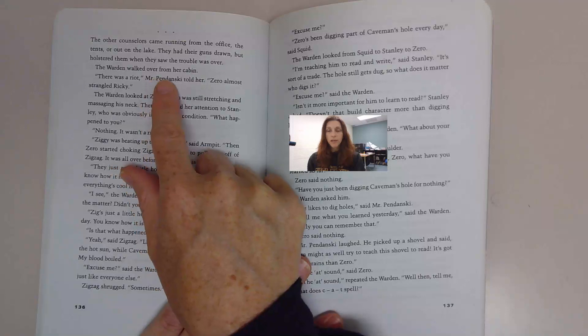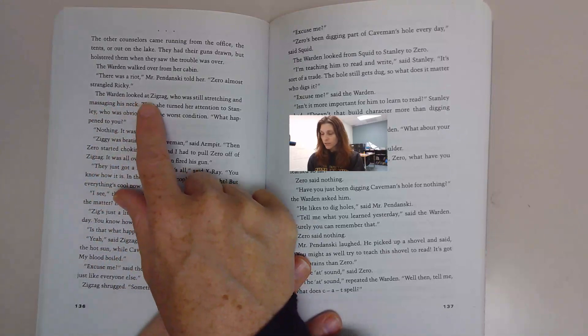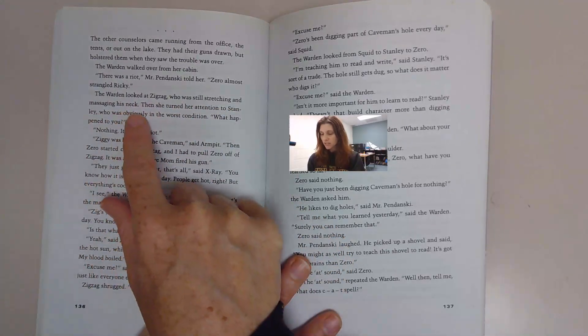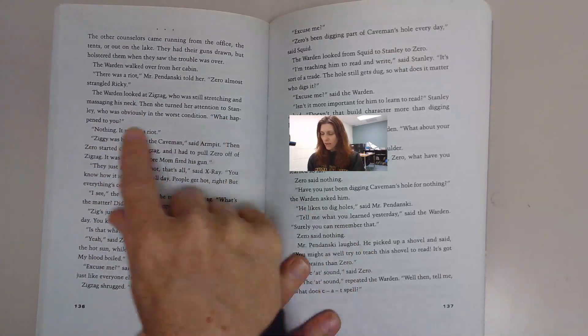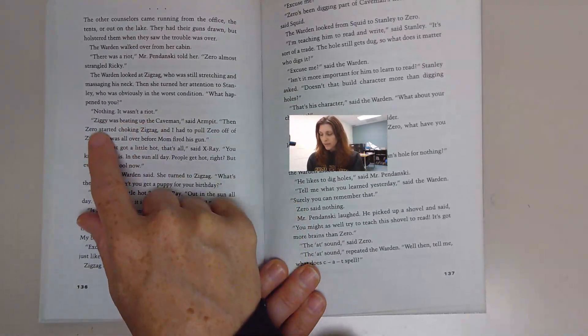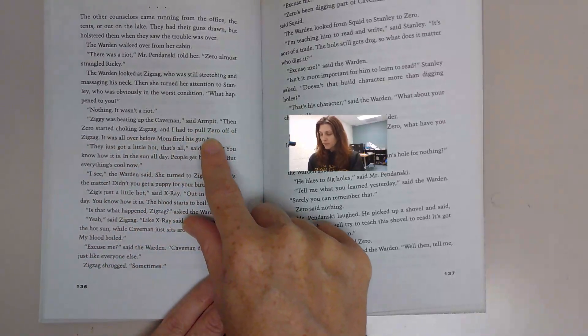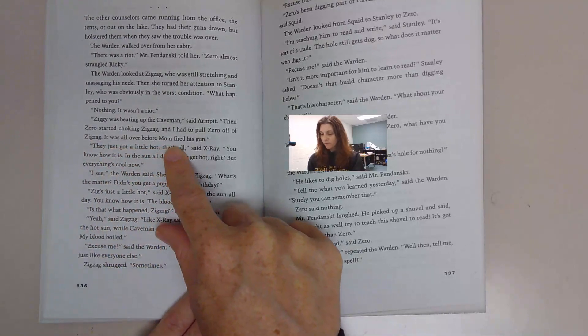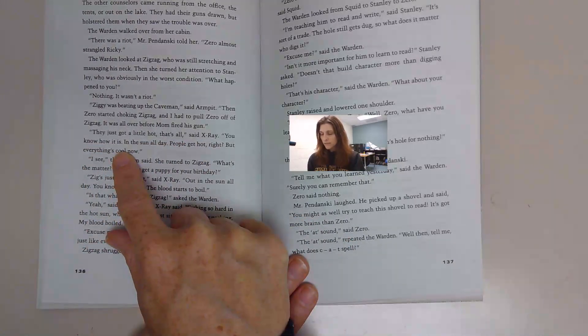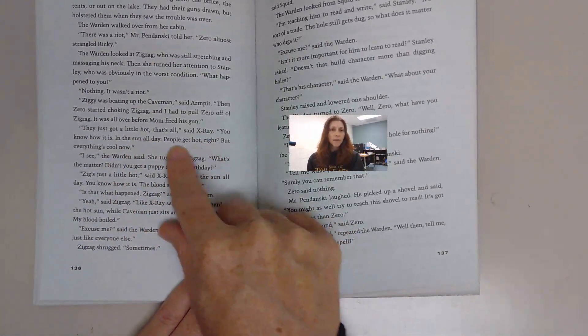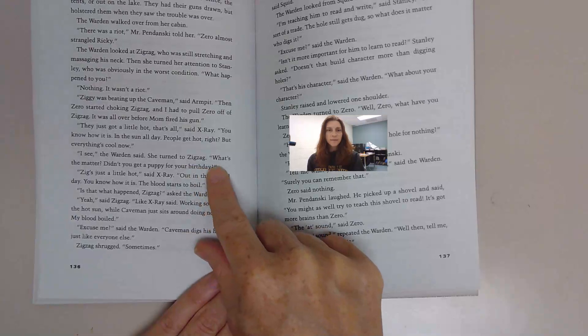The warden walked over from her cabin. There was a riot, Mr. Pendanski told her. Zero almost strangled Ricky. The warden looked at Zigzag, who was still massaging his neck. Then she turned her attention to Stanley, who was obviously in the worst condition. What happened to you? Nothing. It wasn't a riot. Ziggy was beating up the caveman, said Armpit. Then Zero started choking Zigzag. They just got a little hot, that's all, said X-Ray. You know how it is, in the sun all day. What's the matter? Didn't you get a puppy for your birthday?